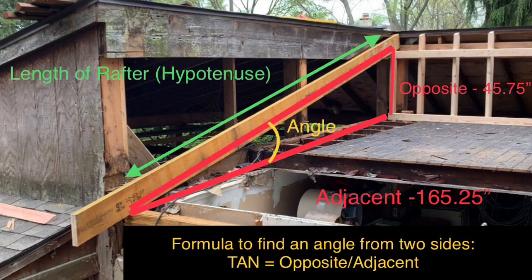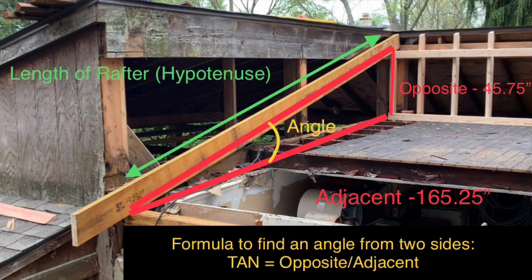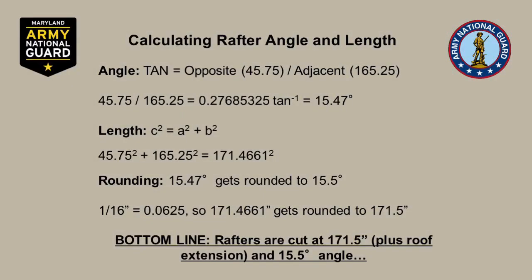Now I have all the information needed to find the angle and the length of the rafter using the A and B side lengths. Using the tangent formula — opposite divided by adjacent — we divide 45.75 by 165.25, getting 0.2768. Applying the inverse tangent function gives 15.47 degrees. To find the rafter length we use the Pythagorean theorem: square the A side, add it to the square of the B side, then take the square root, which gives 171.4661 inches.